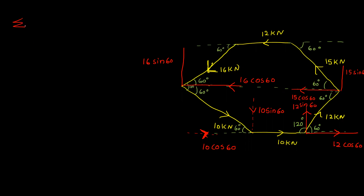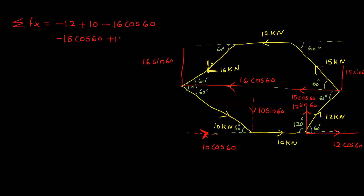We have horizontal and vertical components. Sum of Fx equals: taking positive for the right side, we have 16 cos 60, minus 16 cos 60, minus 15 cos 60, minus 16 cos 60, and then 10 cos 60 plus 12 cos 60. That is equal to minus 6.5 kilo Newton.